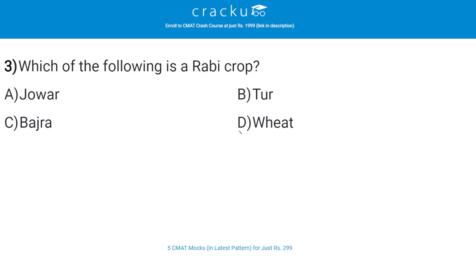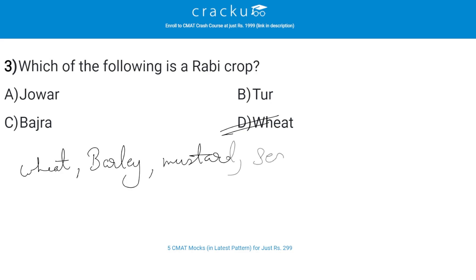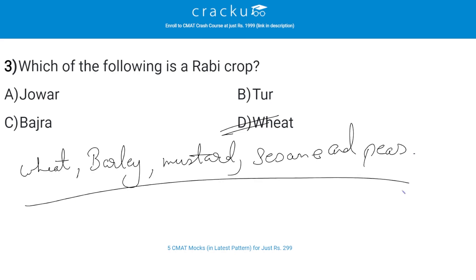Which of the following is a rabi crop? The correct answer is D — wheat. The major rabi crops are wheat, barley, mustard, sesame, and peas.